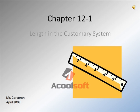Hello, and welcome to Chapter 12-1, Length and the Customary System. Today, we'll be working with three things: converting one unit of measurement to another, properly using a ruler to draw out a specific line, as well as using a ruler to measure objects.